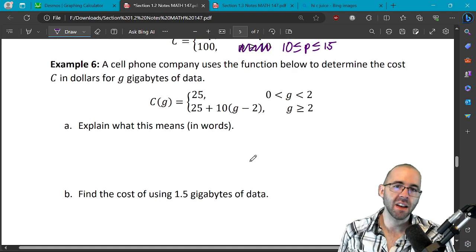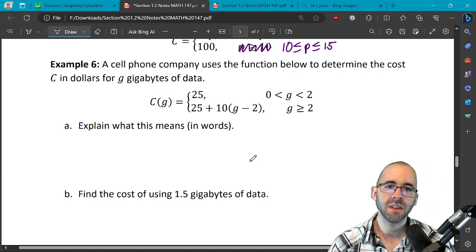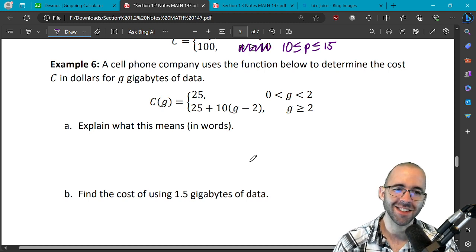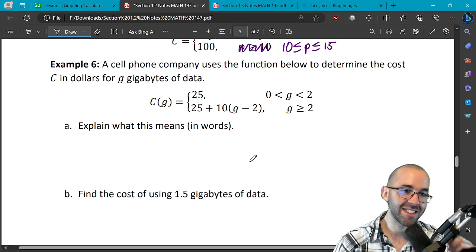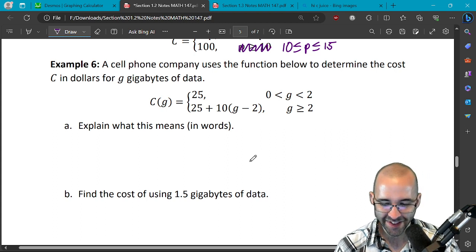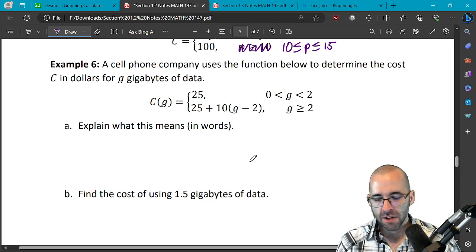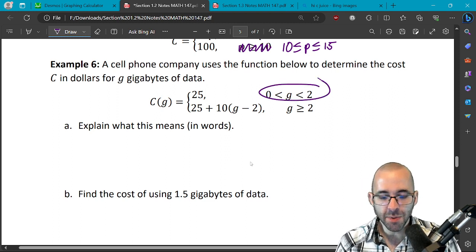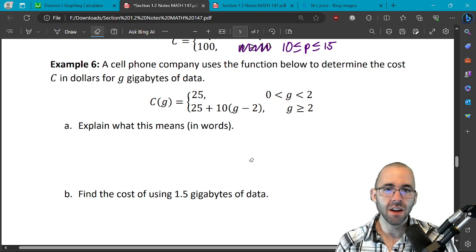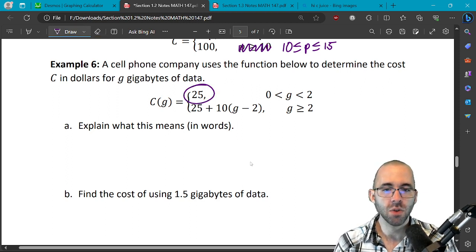We're going to use that in the next example. We got a cell phone company and they're using the function below to determine the cost in dollars for G gigabytes of data. I didn't update this question, I do still have a limited data plan by the way, this does still exist at the time I'm recording this video, but most people have unlimited data. The cost is C for G gigabytes of data. So this says that if G is between zero and two, so if you use between no gigabytes of data and two gigabytes of data, you're going to be charged twenty five dollars.